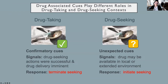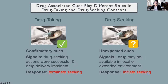Consider the example of drug use paraphernalia. During active drug use, these paraphernalia might serve as a confirmatory cue, indicating that previous drug-seeking actions were successful, drug delivery is imminent, and that drug-seeking can be terminated. Whereas if the same paraphernalia were encountered unexpectedly during a period of abstinence, this might instead signal that drug is available nearby and the appropriate response would be to seek drug. So what do the dopamine responses to the same drug cue look like in these two conditions, and how do these signals change over the course of long-term drug use?